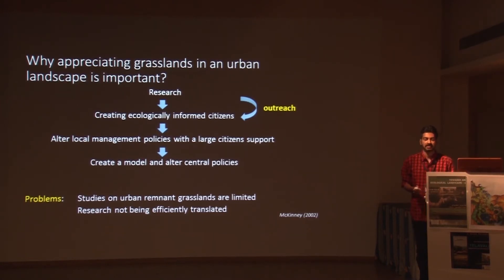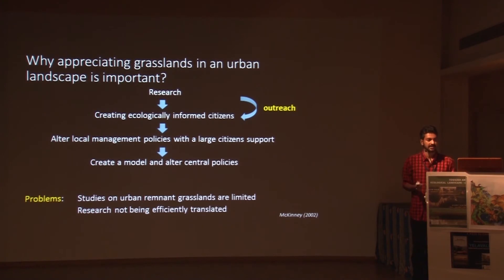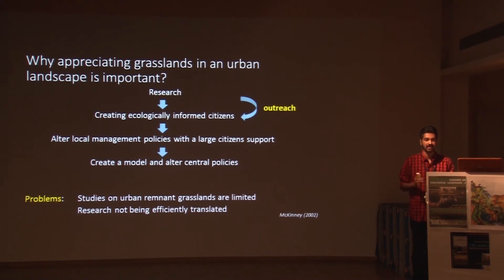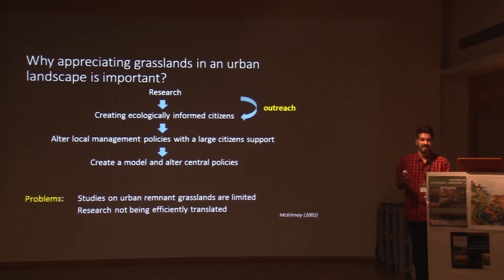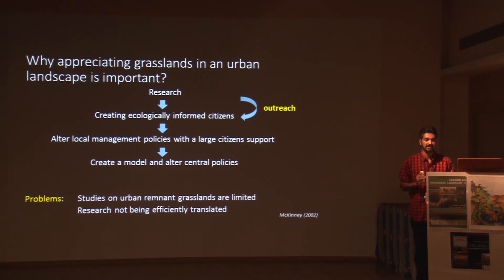Why appreciate grassland systems only in urban areas? We could do this in protected areas too - but why Pune city specifically? The ideal flow is: research is done, it's communicated to citizens, resulting in informed citizens who can directly alter local-level policies, and eventually serve as a model to alter central policies. As you know, if central policy says you have to plant two crore trees, it's really difficult for someone at the grassroots level to say no - they have to follow a top-down approach. This could serve as a bottom-up approach - the opposite - and it's the way forward. But two big problems exist: the outreach link is not really good, and very few people can communicate research well to citizens. Second, very little baseline data is available for some places, and that needs to be addressed.